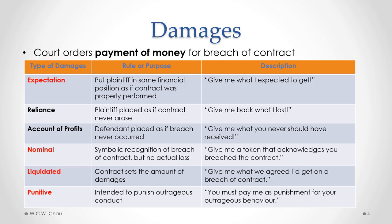When a court orders damages, it is ordering the breaching party to pay some amount of money to the innocent party to compensate for that breach of contract. How those damages are determined will vary depending on the specific type. This chart summarizes a number of different kinds of damages. The types highlighted in red that we will examine are expectation damages, nominal damages, liquidated damages, and punitive damages.